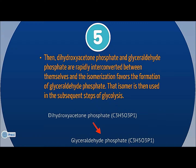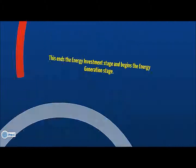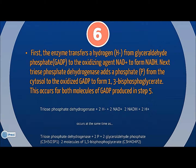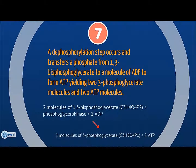Once stage one is completed, the cycle moves into stage two, energy generation. First, a reduction-oxidation reaction occurs involving glyceraldehyde and the oxidizing agent NAD+. The dephosphorylation step occurs and a phosphate is removed from the sugar and added to ADP to produce the first ATP. Because there are now twice as many sugars in the cycle, two ATPs are produced.